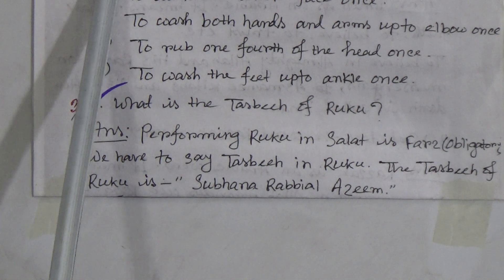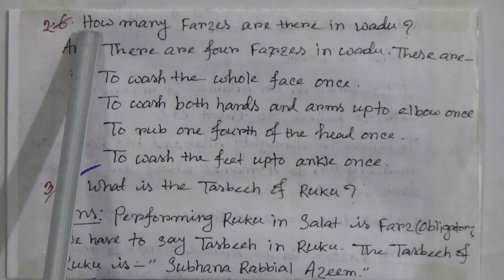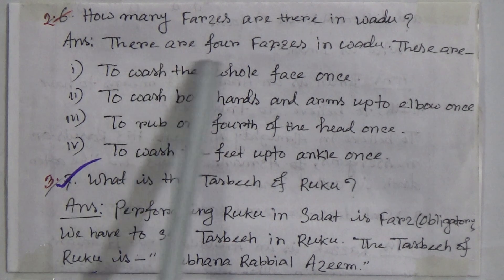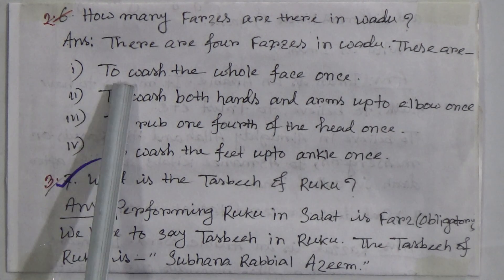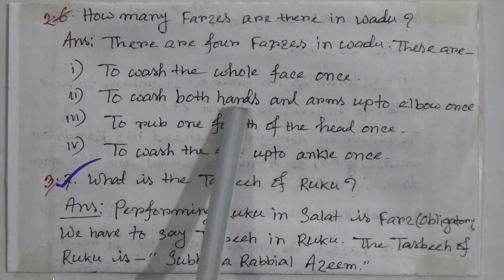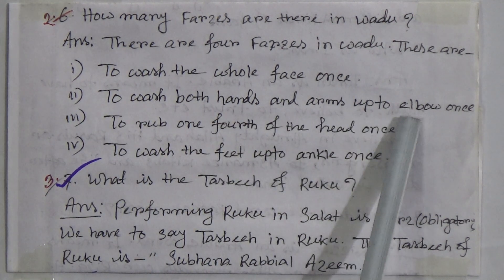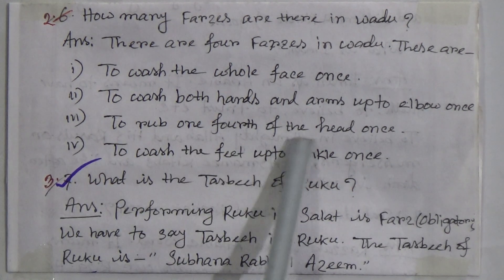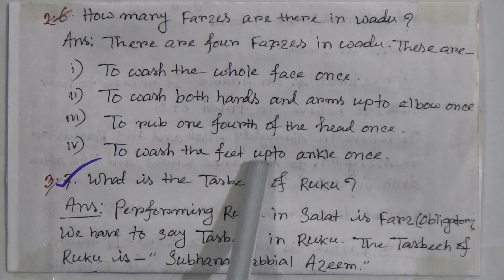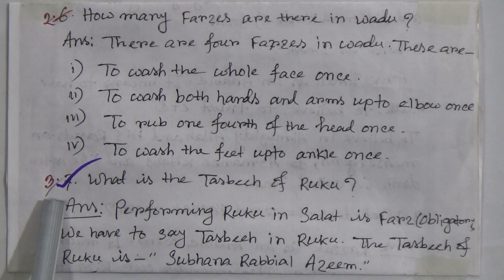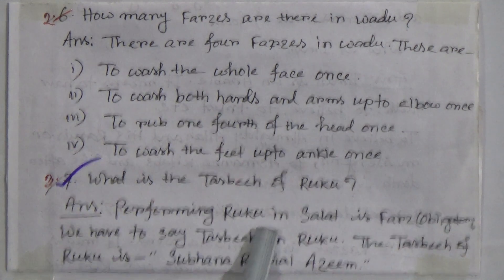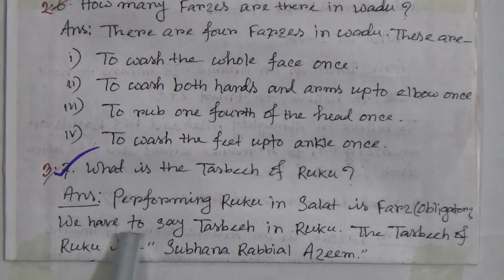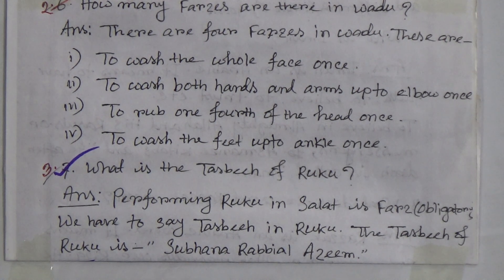Let me repeat again. Question number two, Chapter Two: How many faraid are there in wudu? Answer: There are four faraid in wudu. Number one, to wash the whole face; number two, to wash both hands and arms up to the elbow once; number three, to wipe one-fourth of the head once; number four, to wash the feet up to the ankle once. Question number three: What is the tasbih of ruku? Answer: Performing ruku in salat is obligatory. The tasbih of ruku is Subhana Rabbi al-Azim.